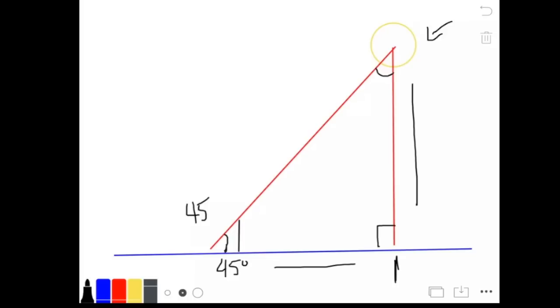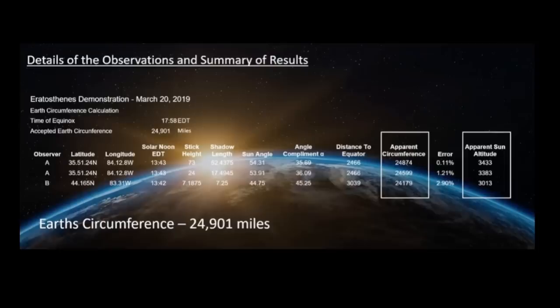Here's the problem that we run into: my friend Harry, or Blue Marble Science, did an observation down here. Here are the actual numbers. Harry was down at 35.51 north, and I was at 44.165 north. If you read the actual numbers of the shadow lengths, the sun angles, and the complementary angles, you can actually calculate what the circumference of the Earth will be.